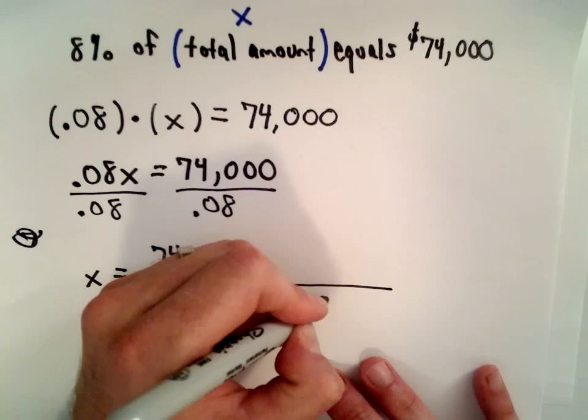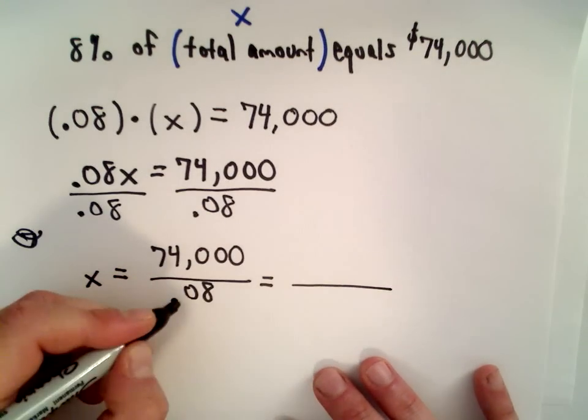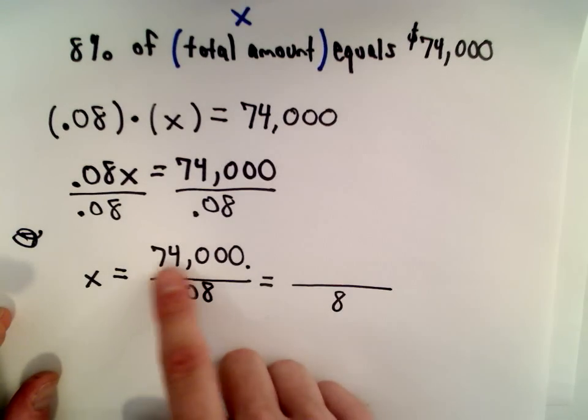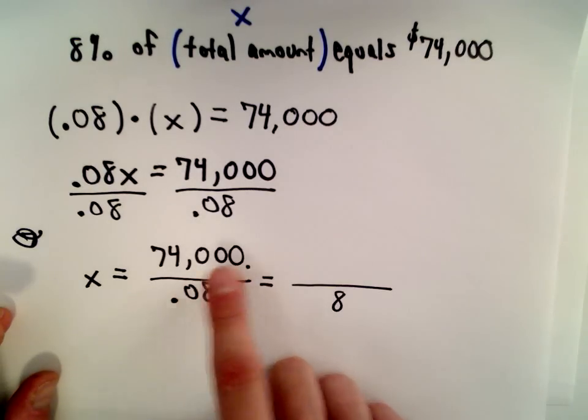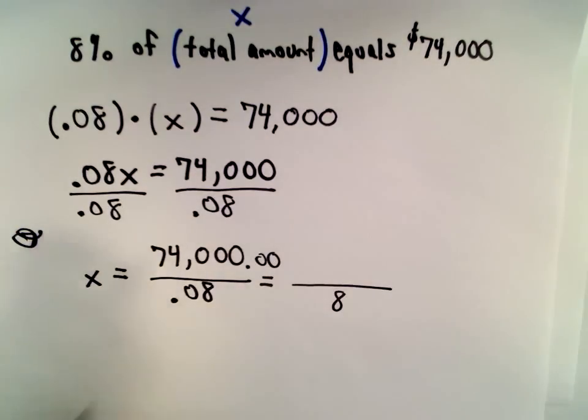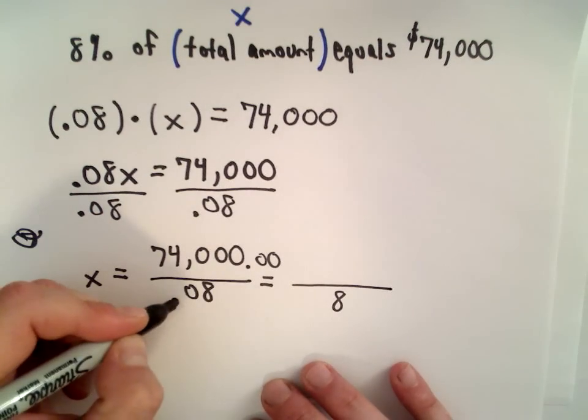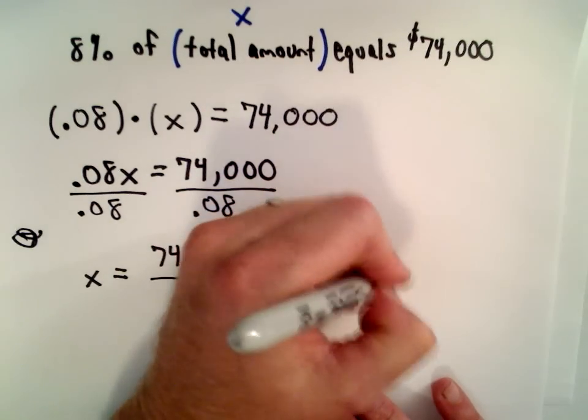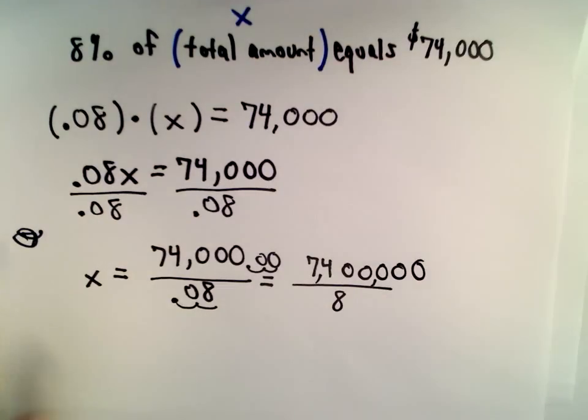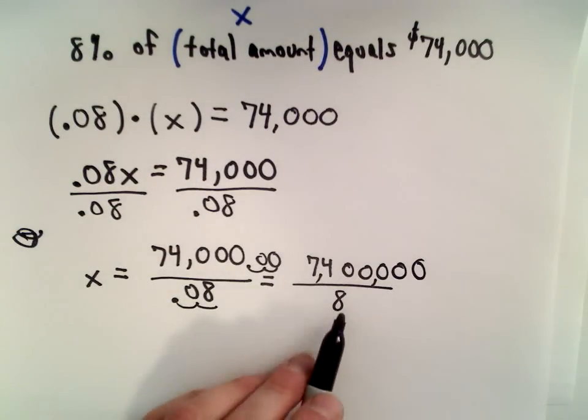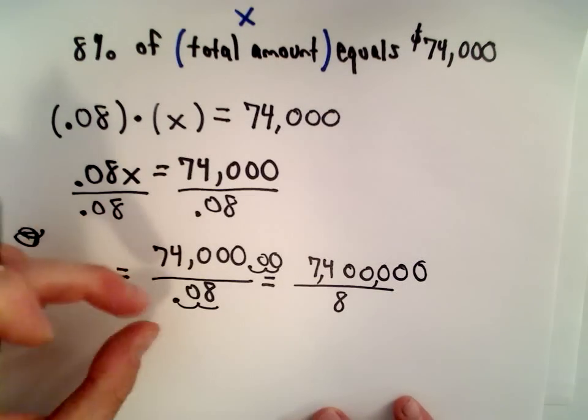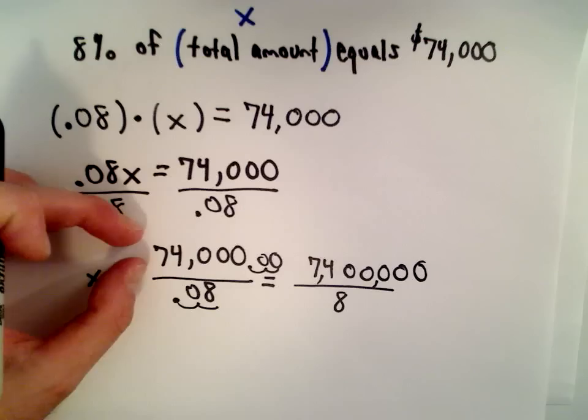So what I'm going to do is I'm going to move the decimal place two places to the right on the bottom. So I'm going to move it two places to the right. That's going to give me just eight. And if you imagine the number on top, I could write $74,000 as $74,000 and then we could have a point. We could write $74,000 as $74,000 and zero cents. The same thing, if I move the decimal place two places to the right on the bottom, I've got to move it two places to the right on the top.